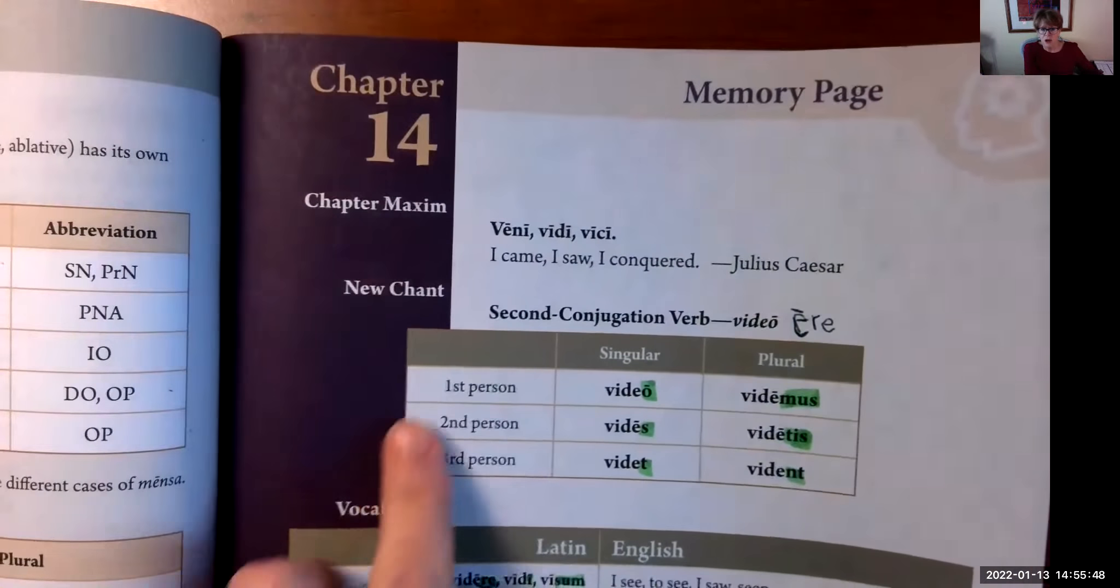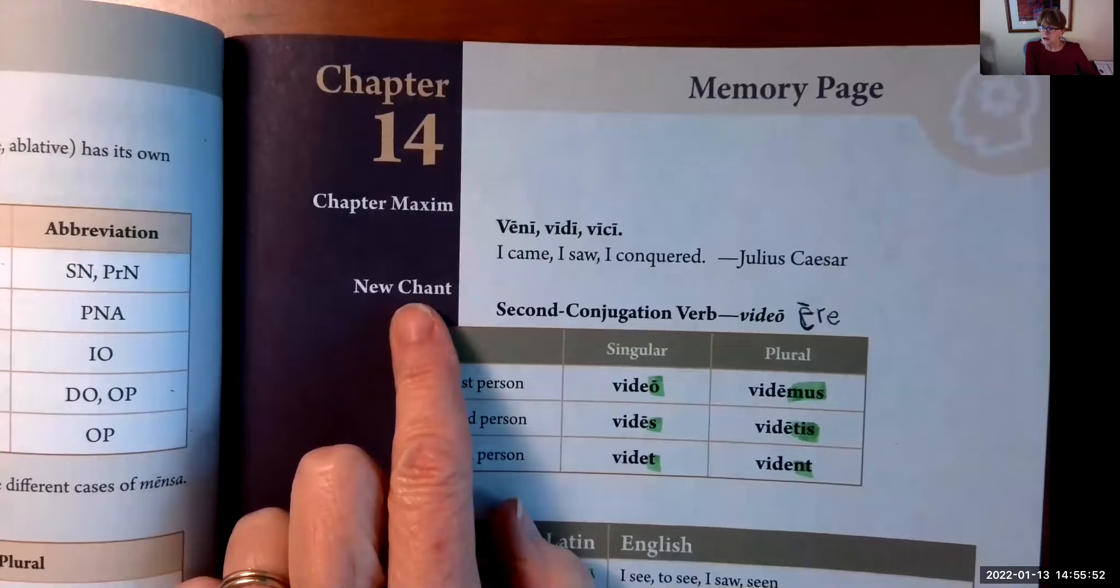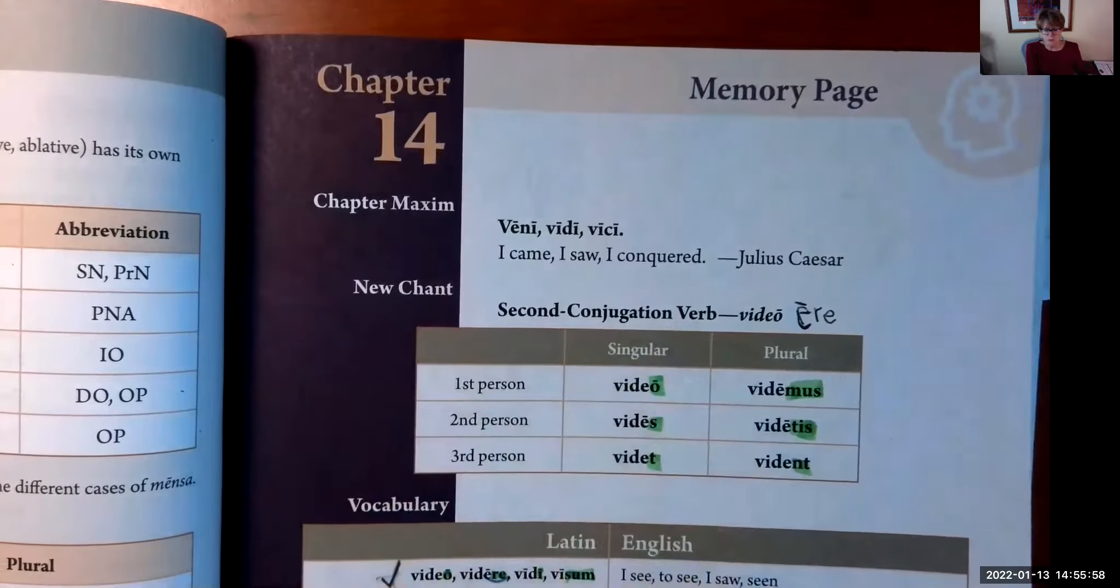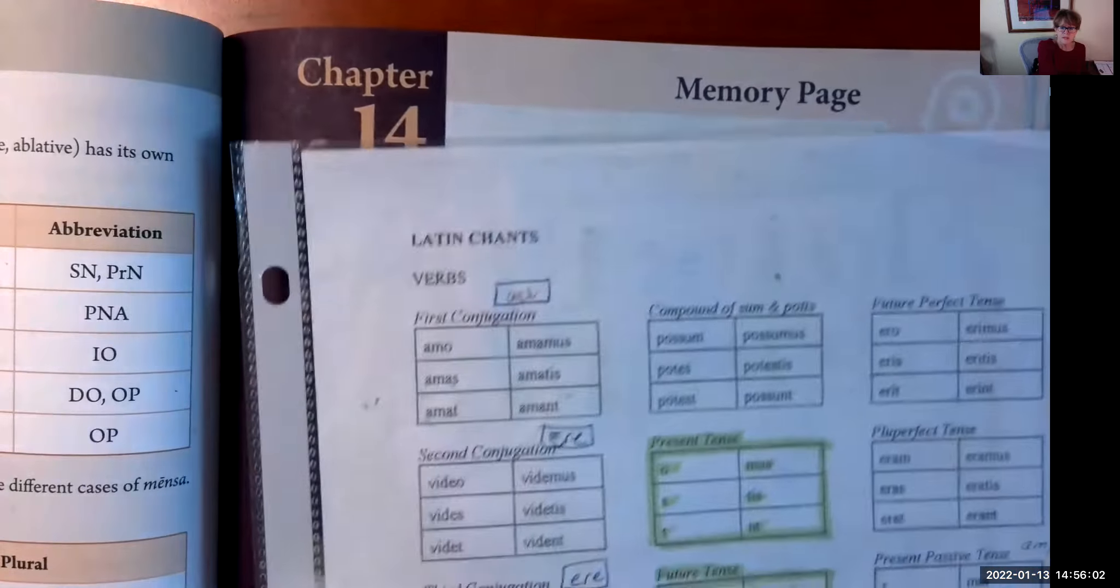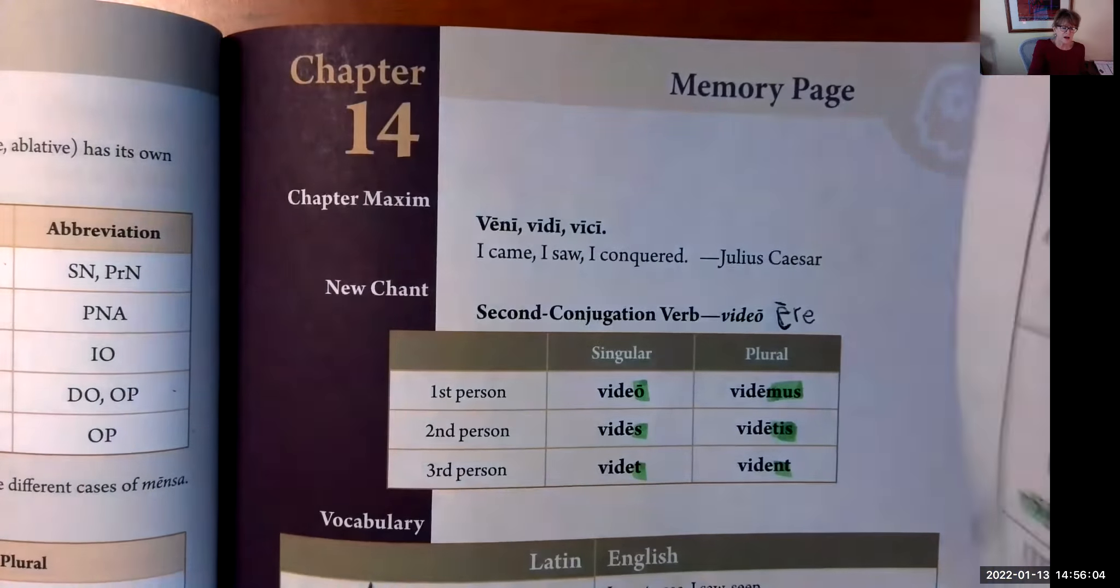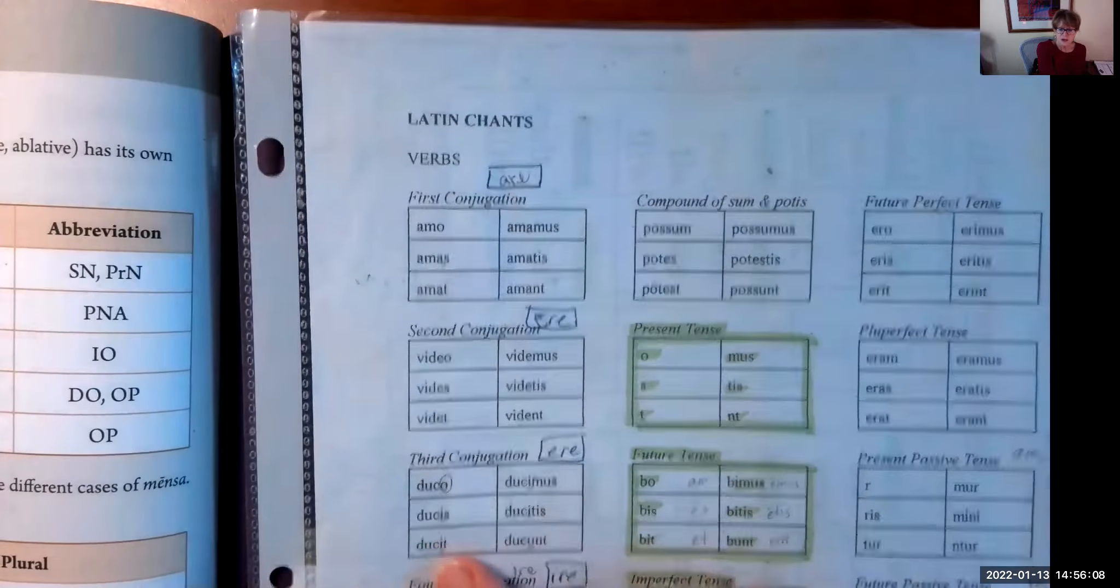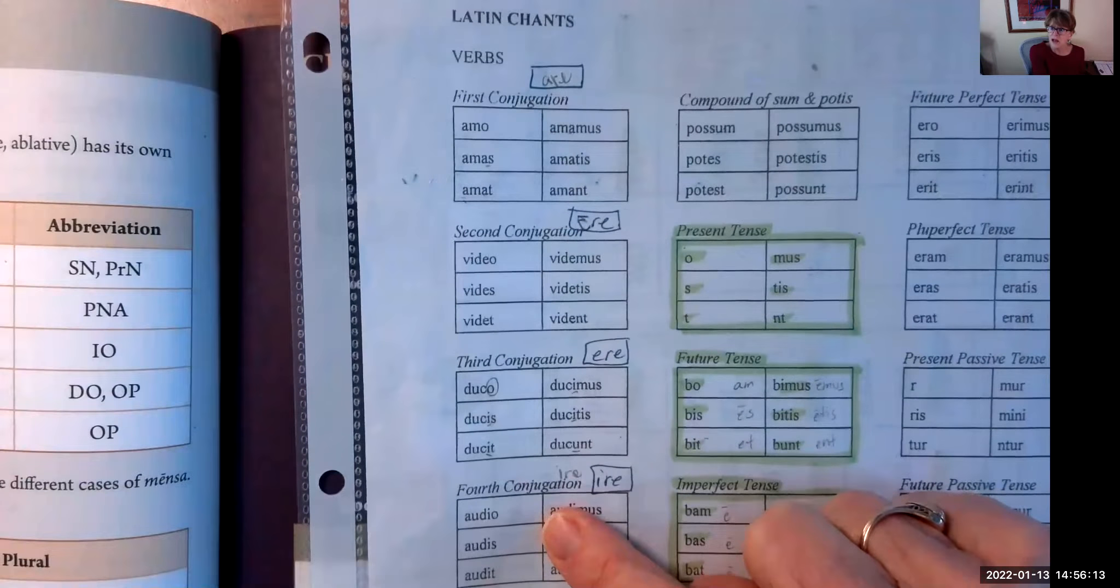Speaking of the next chapter, there it is: Veni, vidi, vici. We're going to do two chapters this week. We have a new chant that we're introducing called the second conjugation verb.